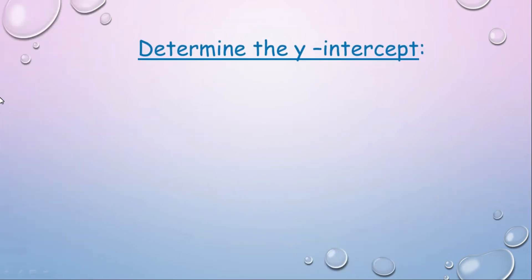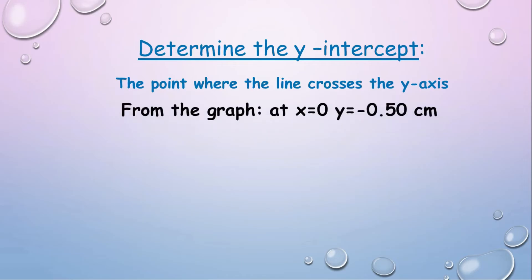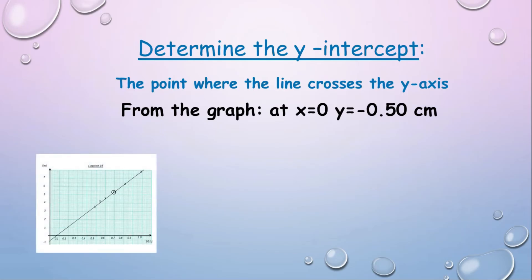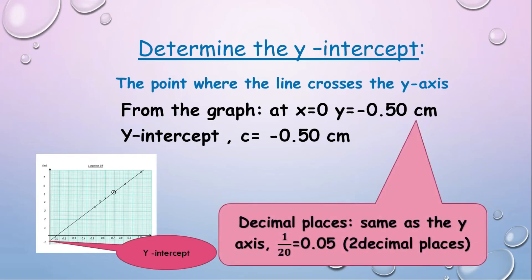Determine the y-intercept. The y-intercept is the point where the line crosses the y-axis and is always labeled as c. From the graph, at x = 0, y = −0.50 cm. Therefore, the y-intercept c = −0.50 cm. The decimal places are the same as the y-axis: 1 divided by 20 equals 0.05, meaning two decimal places.